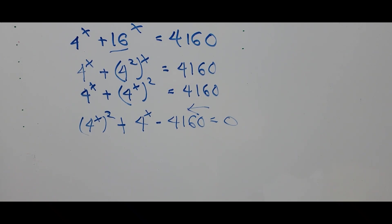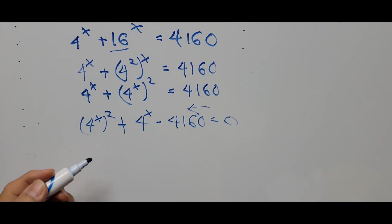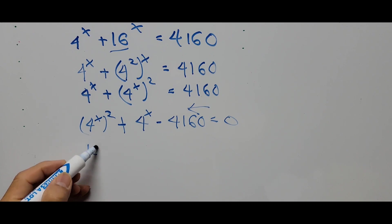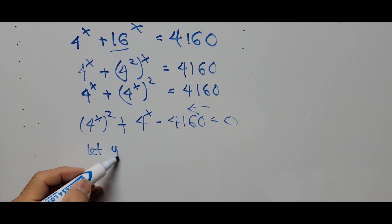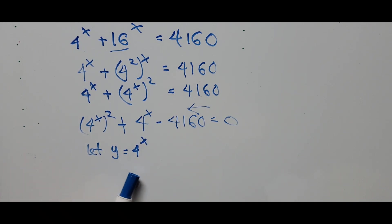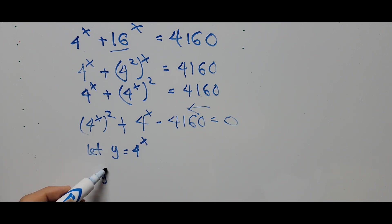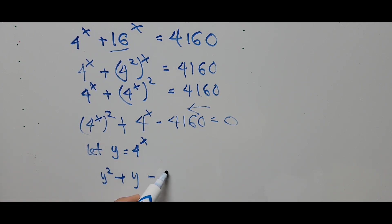Let's introduce a new variable to replace 4 to the power x. Let's say y equals 4 to the power x. Substituting in place of 4 to the power x, the equation now becomes y squared plus y minus 4160 equals 0.